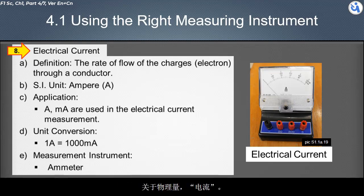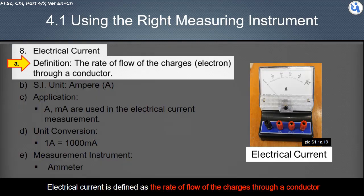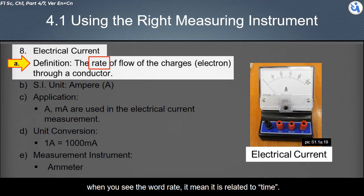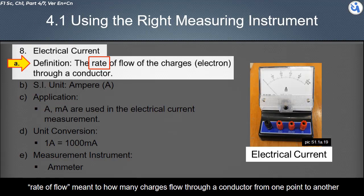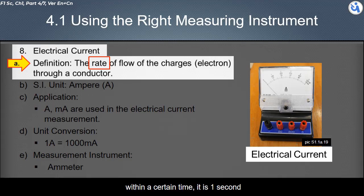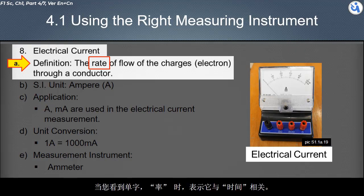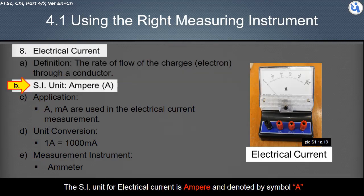About physical quantity electrical current. Electrical current is defined as the rate of flow of the charges through a conductor. When you see the word rate, it means it is related to time. Rate of flow meant to how many charges flow through from one point to another within a certain time, it is one second. The SI unit for electrical current is ampere, and it is denoted by symbol A.